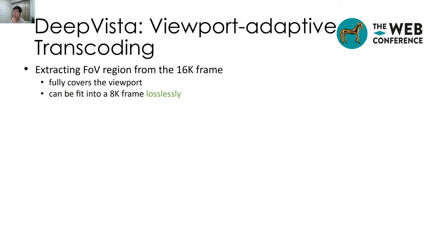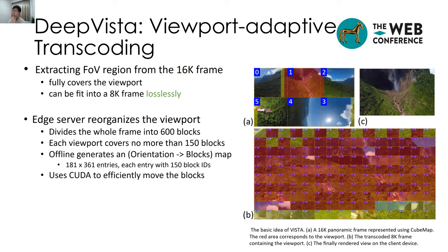So let's introduce DeepVista, the first viewport adaptive transcoding solution. With DeepVista, it extracts the FOV region from the 16K frame, which fully covers the viewport and can be fit into an 8K frame losslessly. We have an edge server that reorganizes the viewport. As shown in the figure, the red part is the viewport and we divide the whole frame into 600 blocks. We find that each viewport can never cover more than 150 blocks, so we can reorganize the 16K resolution frame into an 8K field-of-view stream.